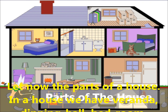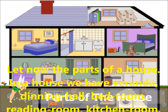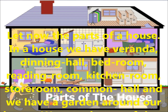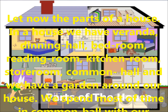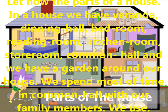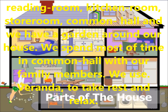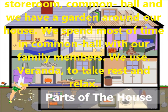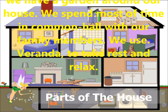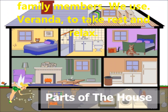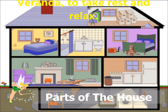Now let us see the parts of a house. In a house we have a veranda, dining hall, bedroom, reading room, kitchen room, storeroom, and common hall. And we have a garden around our house.